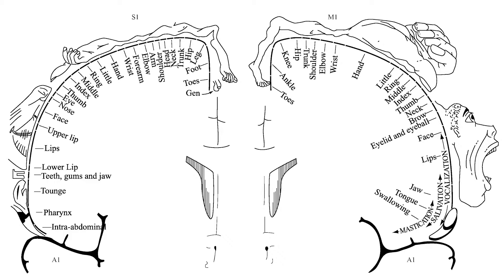Try to picture a map of your entire body across your brain. The size of different body parts depends on how much each body part is used. For example, eyes, lips, ears and mouth are largely represented across this map as they are used for sensation and function.